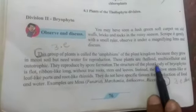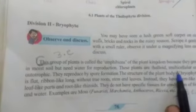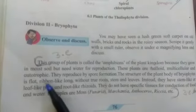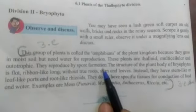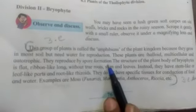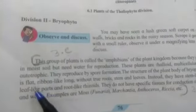These plants are thaloid — meaning their body is hollow or not very dense. They are multi-cellular and autotrophic. They reproduce by spore formation. The structure of the plant body of Bryophyta is flat and ribbon-like.